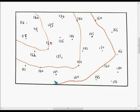Our second rule, contours don't end, they form either complete circles or end at the edge of the map.